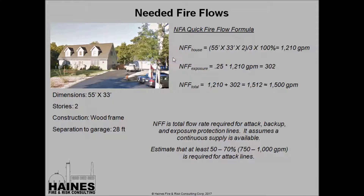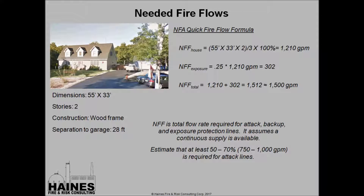To compare the four methods, we're going to look at a single family dwelling with overall dimensions of about 55 feet across and 33 feet deep. It's two stories tall and has a detached garage of wood frame construction located to the right and slightly behind the house. The separation distance between the buildings is about 28 feet. We'll summarize the math during our discussions, with detailed slides showing calculations at the end of the presentation.